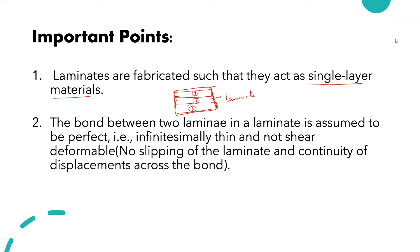After combining the different laminae it becomes a laminate and acts as a single layer. The bond between the laminae in a laminate is assumed to be perfect — that is, infinitesimally thin and not shear deformable, meaning no slipping of the laminae, and there is continuity of displacements across the bonds.